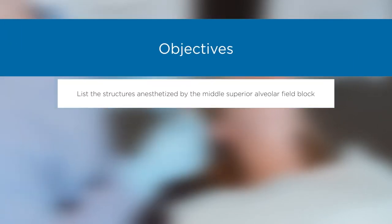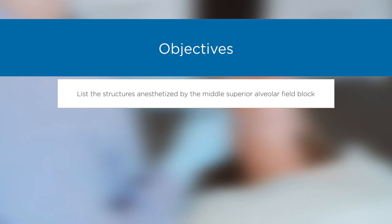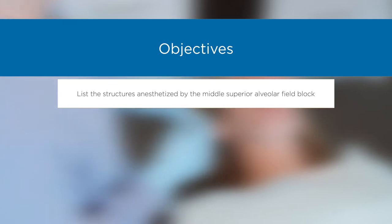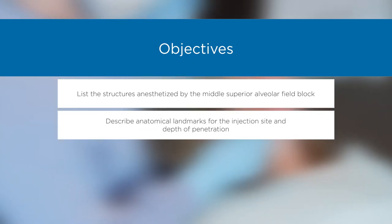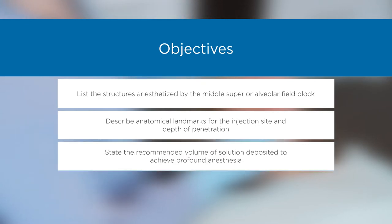Objectives: List the structures anesthetized by the middle superior alveolar field block. Describe anatomical landmarks for the injection site and depth of penetration. State the recommended volume of solution deposited to achieve profound anesthesia.